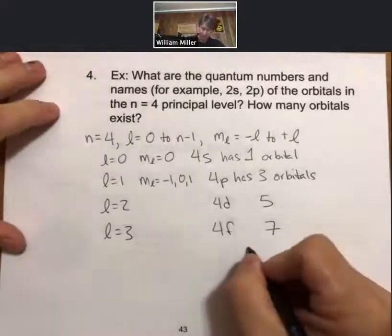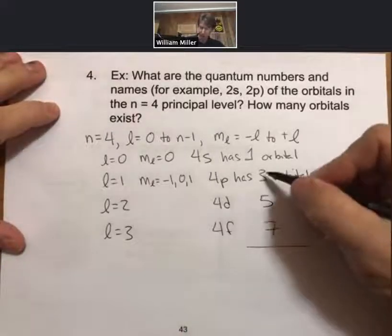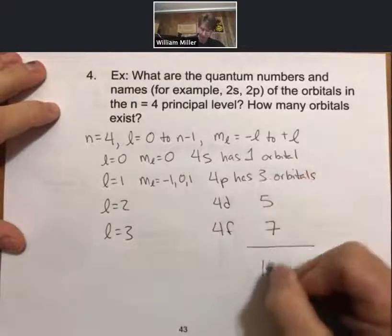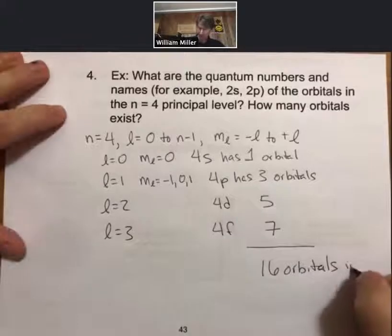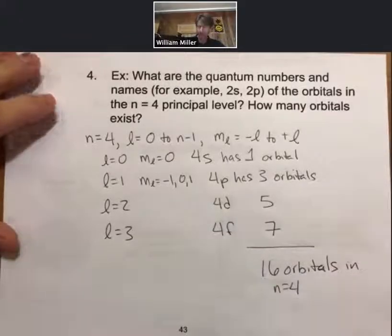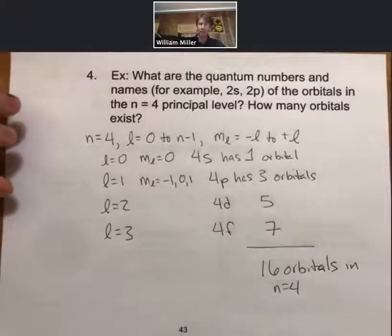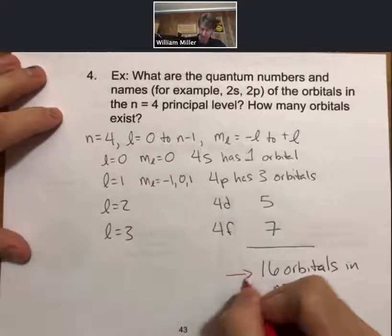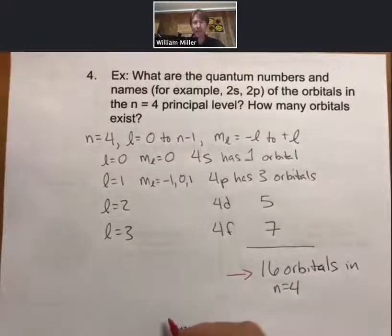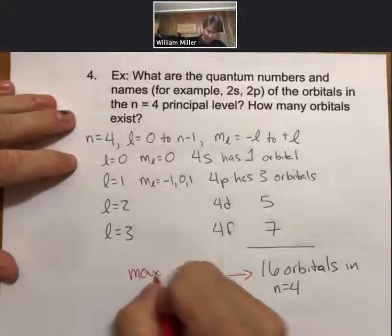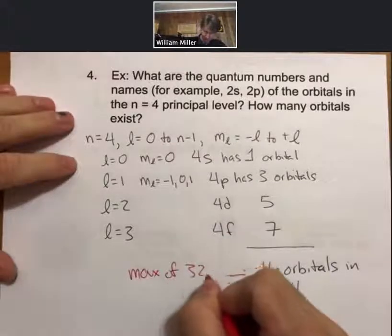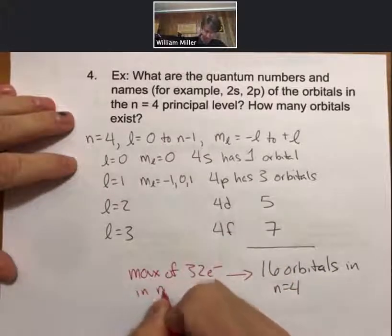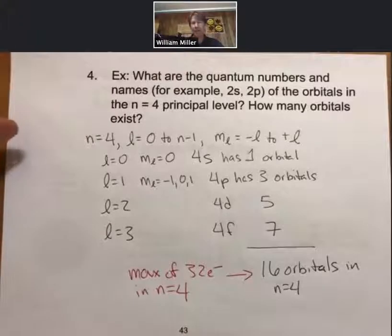For a total of 12, 13, 14, 15, 16 orbitals in n equals 4. And as a note, for n equals 4, if there are 16 orbitals, and each orbital can hold a maximum of 2 electrons, there's a max of 32 electrons in n equals 4.